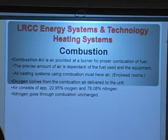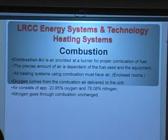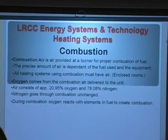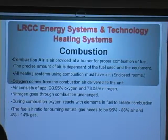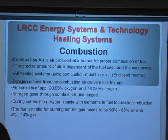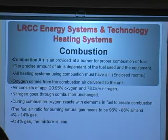Nitrogen just passes through the flame and does not change state at all. So if you have 10 grams of nitrogen going into the flame, you'll have 10 grams exiting in what we call combustion byproducts. During combustion, the oxygen reacts with the elements of the fuel. The fuel-air ratio for burning natural gas needs to be about 86% to 96% air and 4% to 14% gas — depending on whether you're using an atmospheric burner or a forced air burner. At 4% gas, we consider that a lean fire.